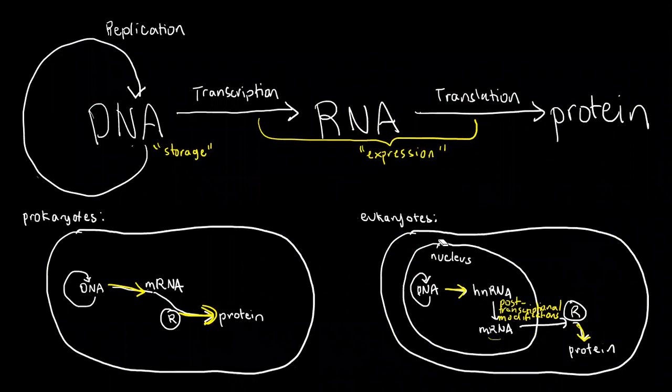Another thing is that eukaryotes have to do post-transcriptional modifications, and prokaryotes do not need to do that. That is because if I have here the product of transcription in eukaryotes, which is actually called the HNRNA, that HNRNA has problems.